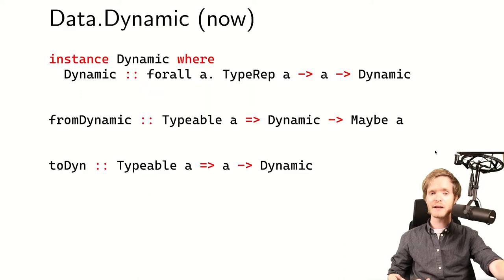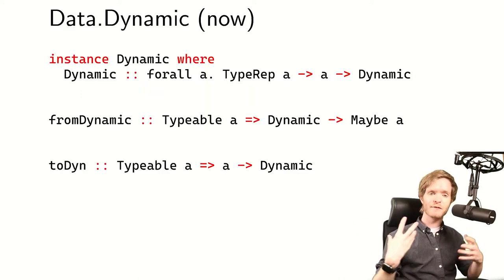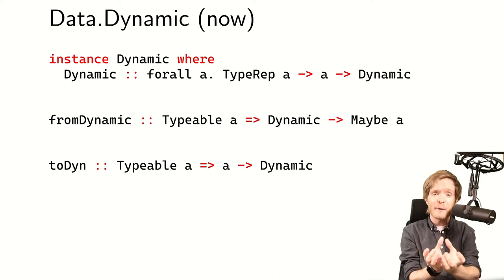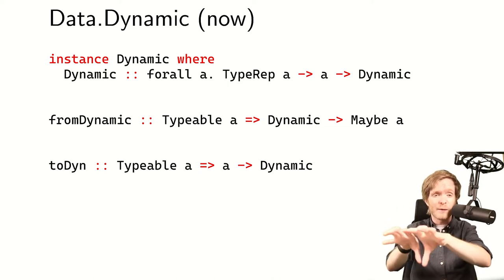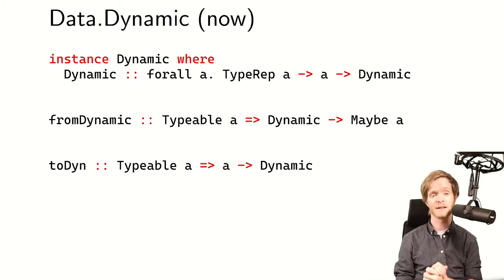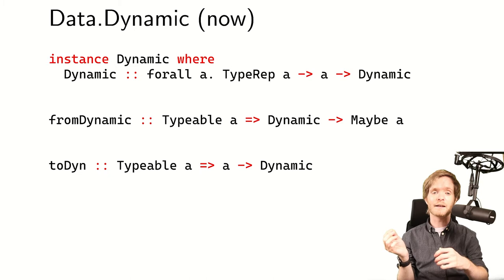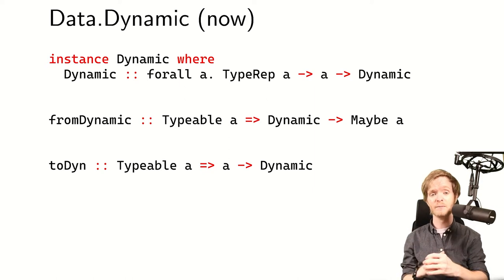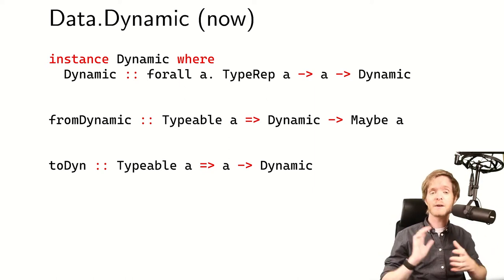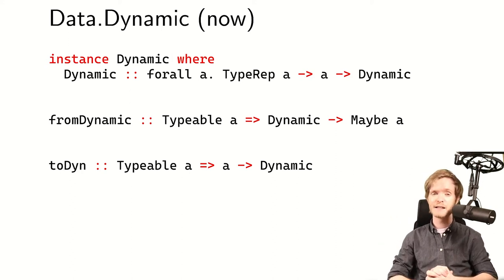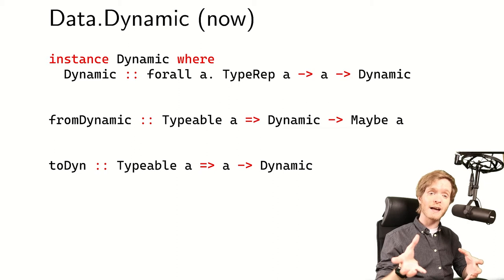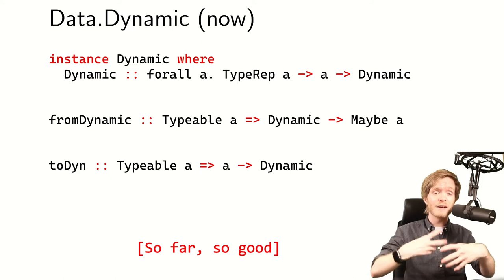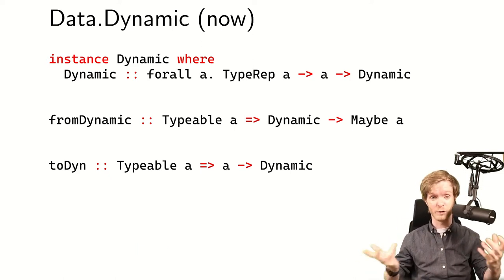You can use dynamic types in Haskell already by using the Data.Dynamic module. It's a very simple module. It has this dynamic type, which is an indexed type rep and the value, which together form a dynamic value containing some type rep — a representation of the type — and the value itself. It has a toDyn function, which takes in a value and returns a dynamic, with the caveat that you have to be able to give it a representable type value. Then you have the fromDynamic function, which is a safe interface: if you give it a dynamic and you want the type it actually contains, you just get that value. But if the dynamic has a different type from the one you expect, you return Nothing.